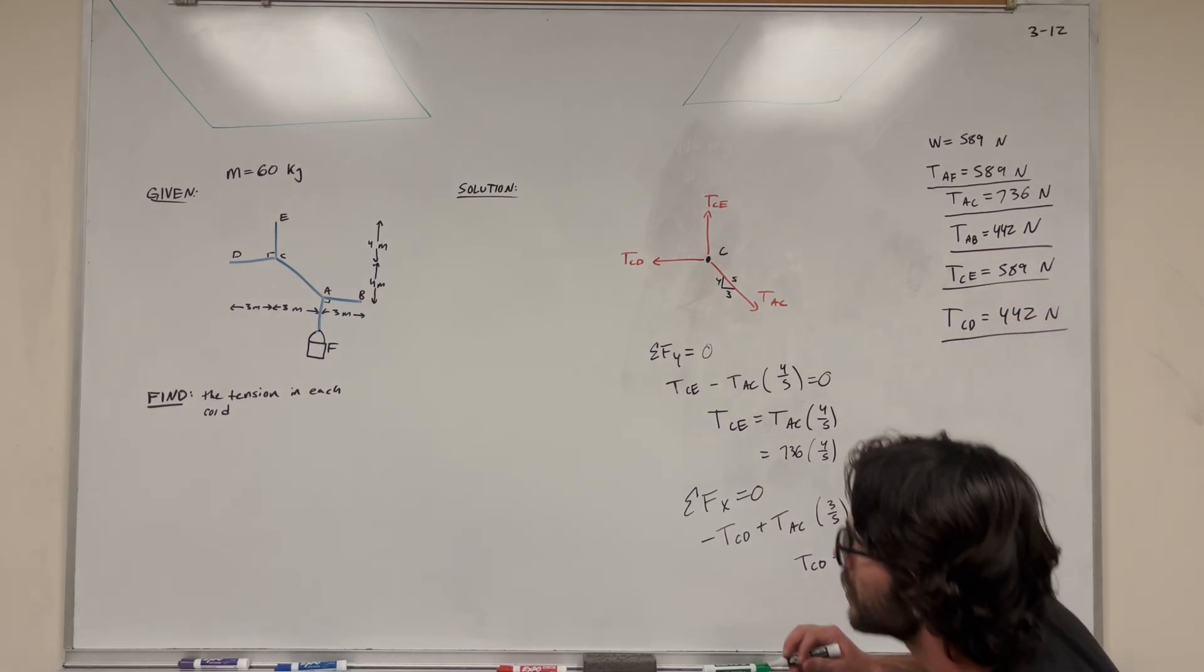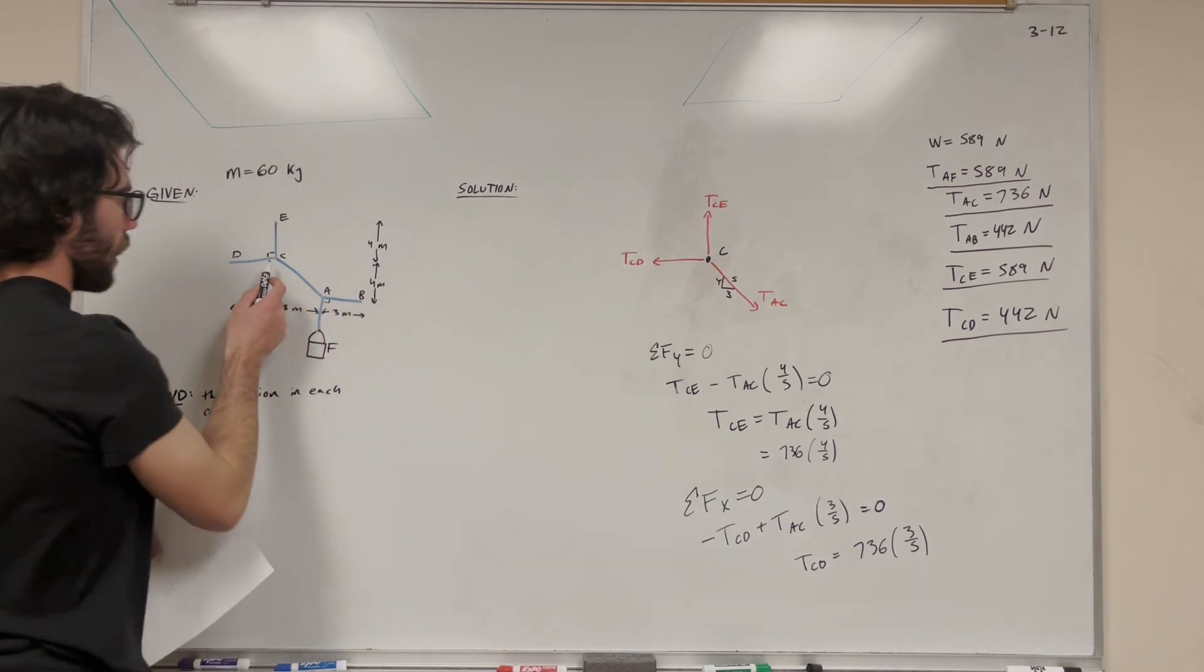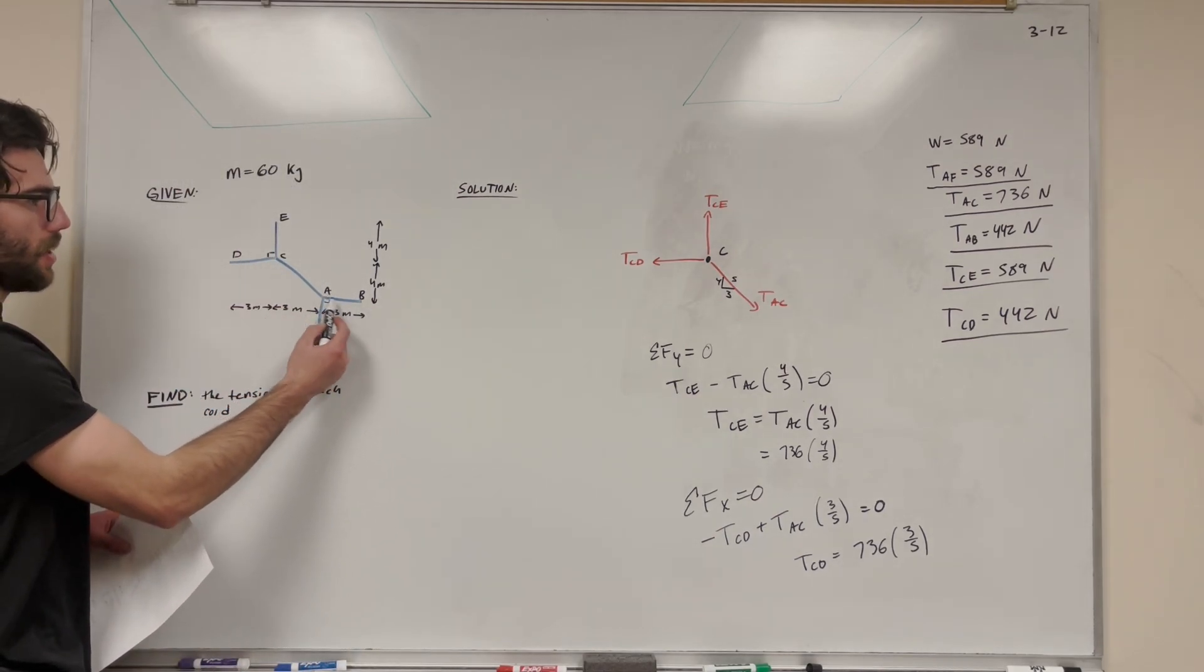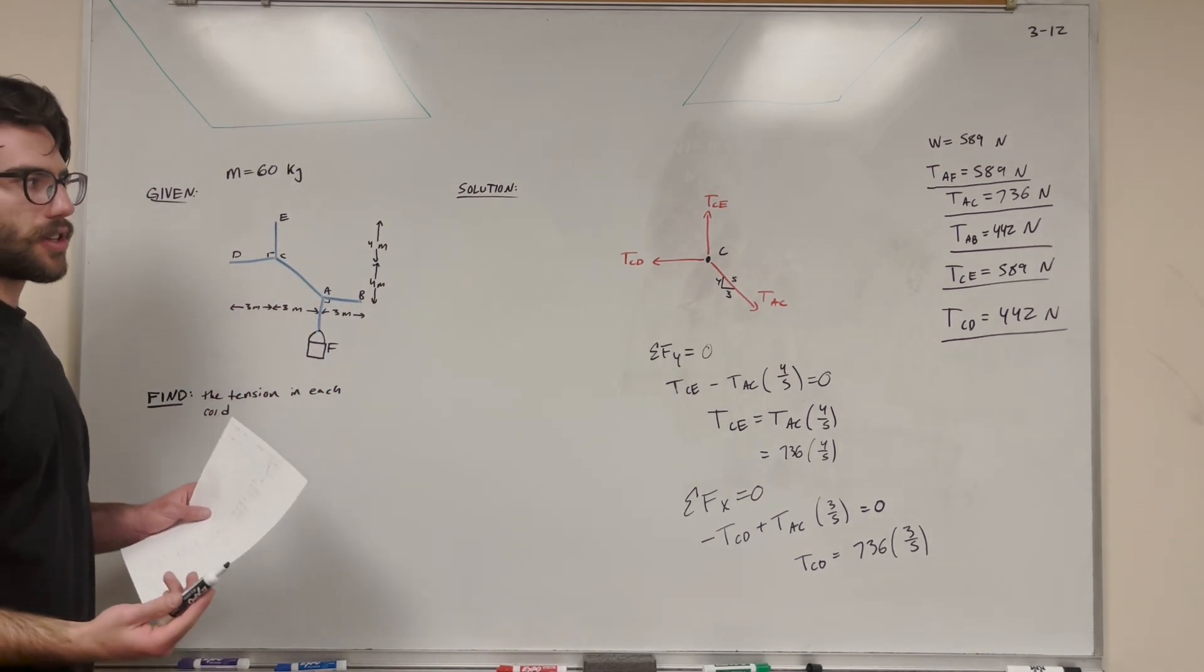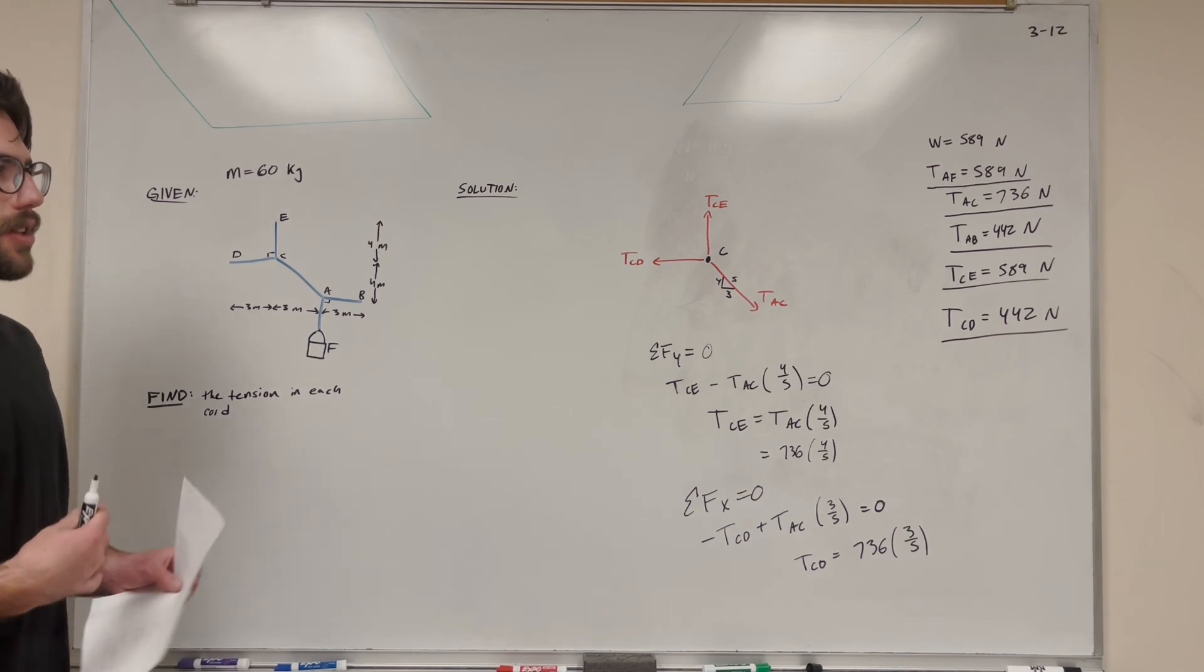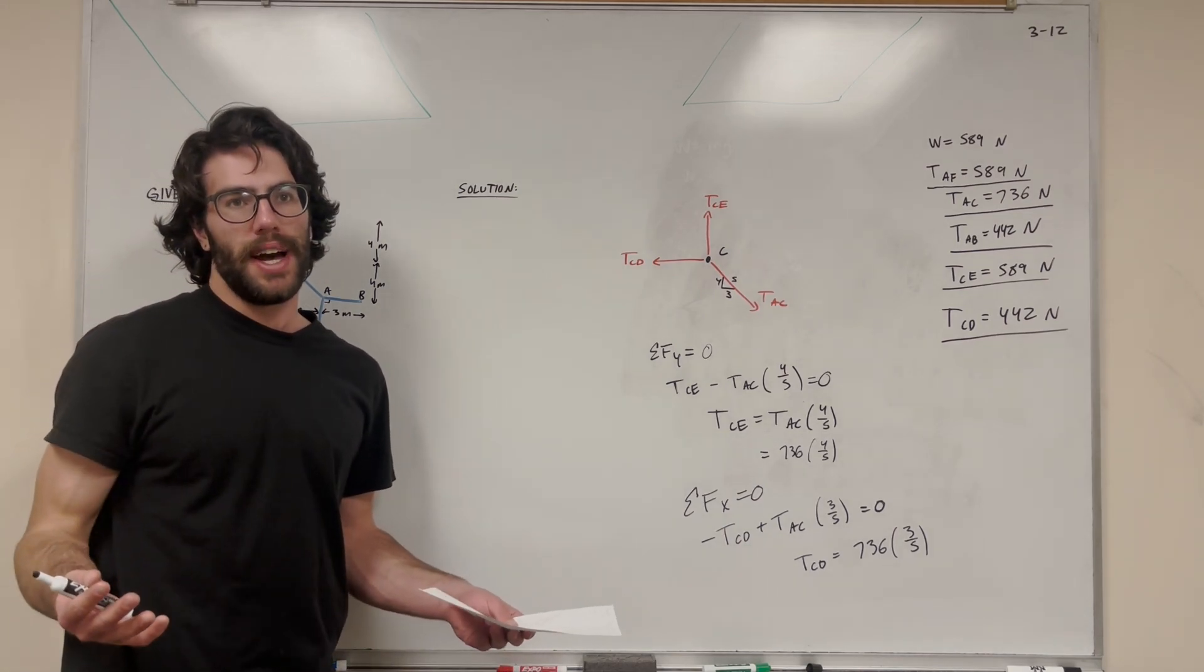And then you're going to find that tension CD is equal to 442 newtons, which is cool because this is tension CD and this cord here is the same as tension AB. So everything's kind of symmetrical in this, which is pretty cool. So there you go. We found all five tensions, right? It wasn't that bad, huh?